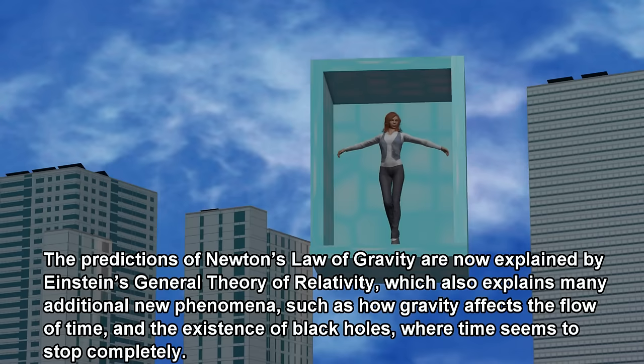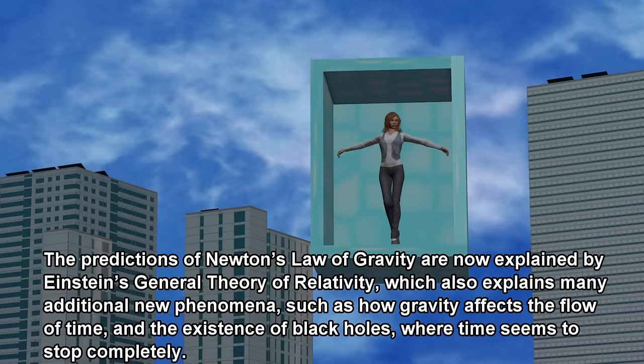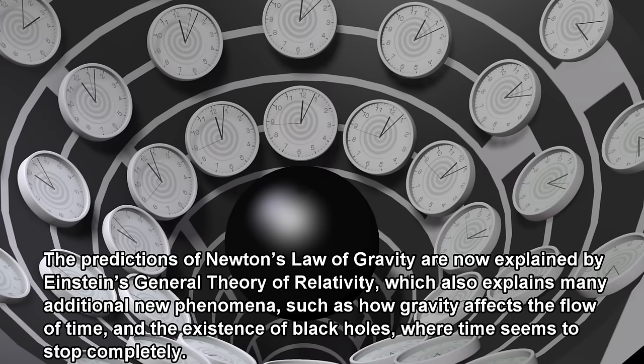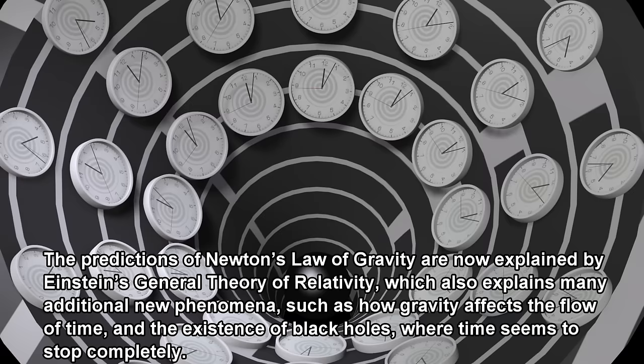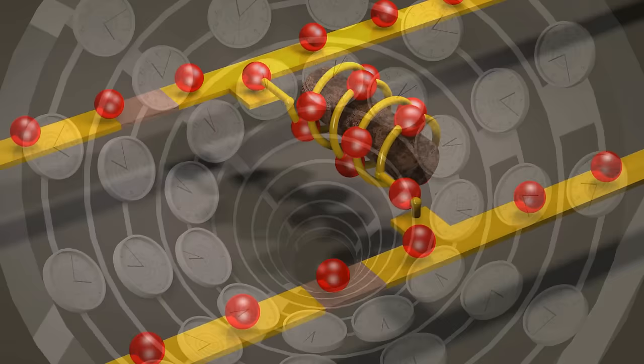The predictions of Newton's Law of Gravity are now explained by Einstein's General Theory of Relativity, which also explains many additional new phenomena, such as how gravity affects the flow of time, and the existence of black holes, where time seems to stop completely.